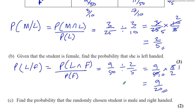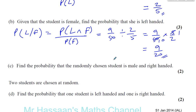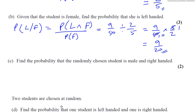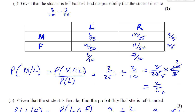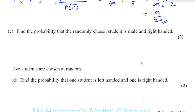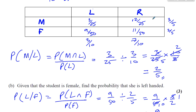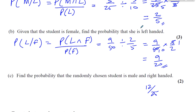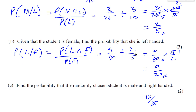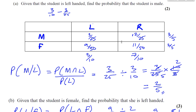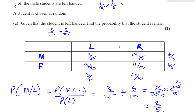Find the probability that the randomly chosen student is male and right-handed. So male and right-handed is going to be 12 over 25 — simple as that. These tables are very useful because once you've made the table, all your working is done beforehand, which is why reading off the answer seems really easy. The other methods do require a bit of working to find that value.